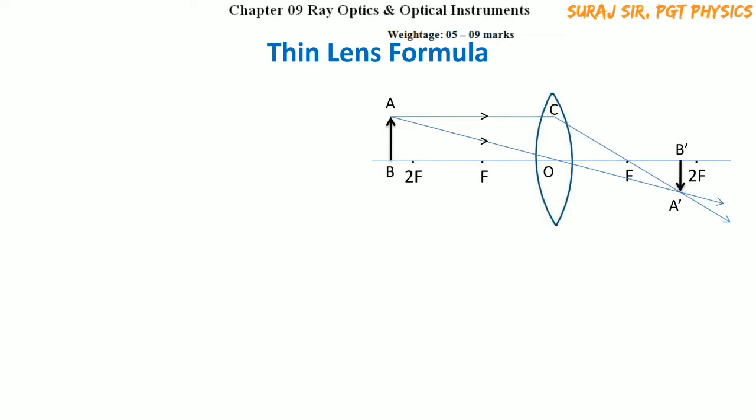This diagram will help us derive the thin lens formula. As I said, to derive any formula — whether for a mirror or a lens — we need to use trigonometry or similarity tests for triangles. To get useful pairs of right-angle triangles, let us join points C and O, and consider triangle ABO and triangle A'B'O.